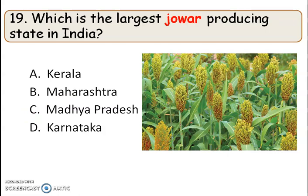Next question: which is the largest jowar producing state in India? The right answer is option B, Maharashtra. Jowar is also known as sorghum and is a good cereal crop. Maharashtra is the largest producer of jowar in India.